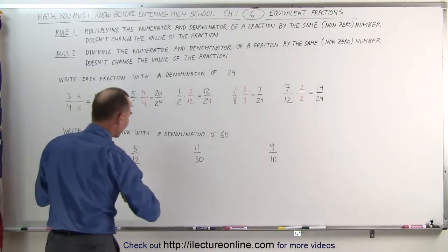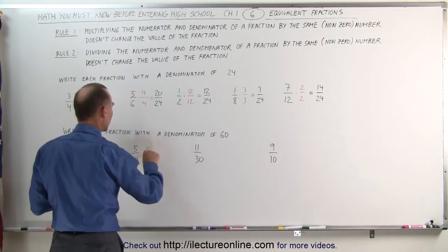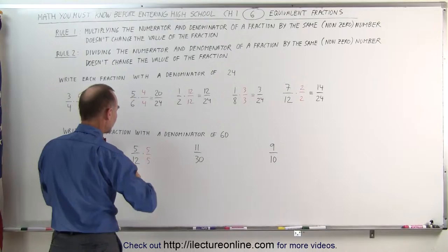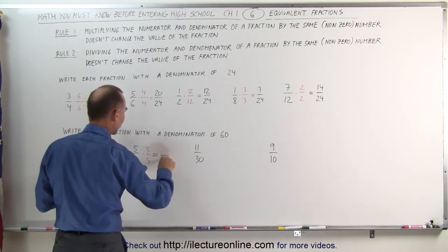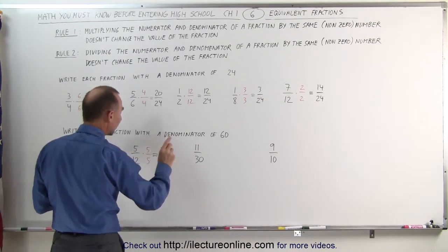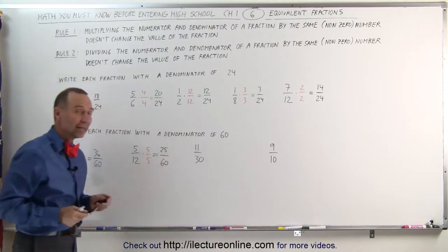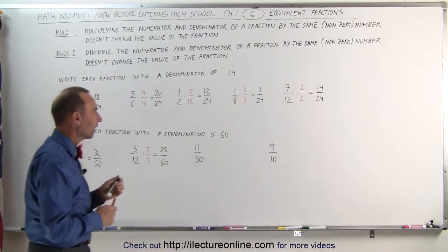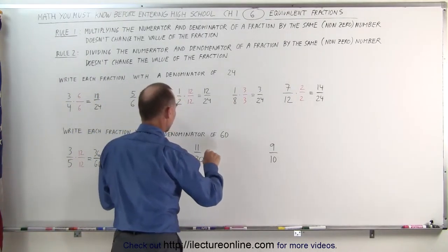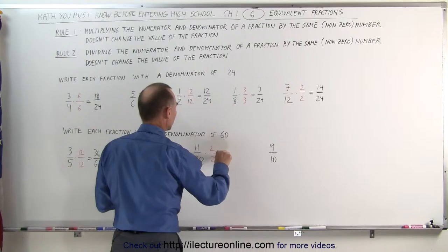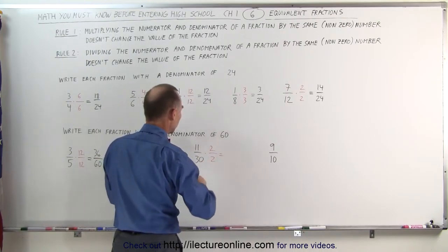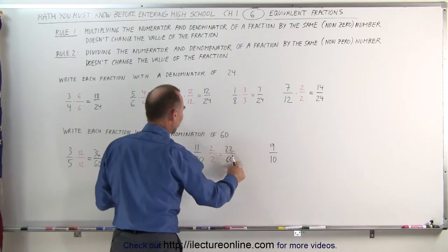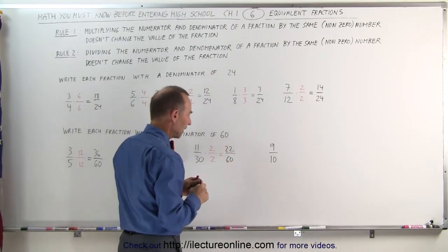12 goes into 60 five times, which means I multiply both the numerator and the denominator by 5. In that way, I get a denominator equal to 60, and a numerator of 25. So 25 divided by 60 is equivalent to 5 divided by 12. For 11 divided by 30, I multiply both the numerator and the denominator by 2, and that gives me the fraction 22 divided by 60. 22 divided by 60 is equivalent to 11 divided by 30.